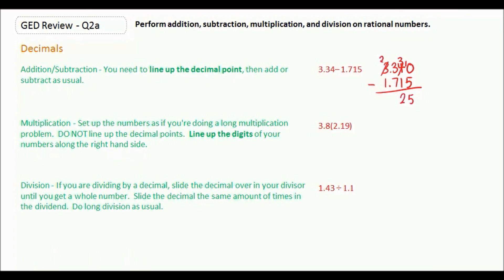You need to borrow again, so that becomes a two, and that becomes a thirteen. Thirteen minus seven is six. We just bring down our decimal point. And two minus one is one.